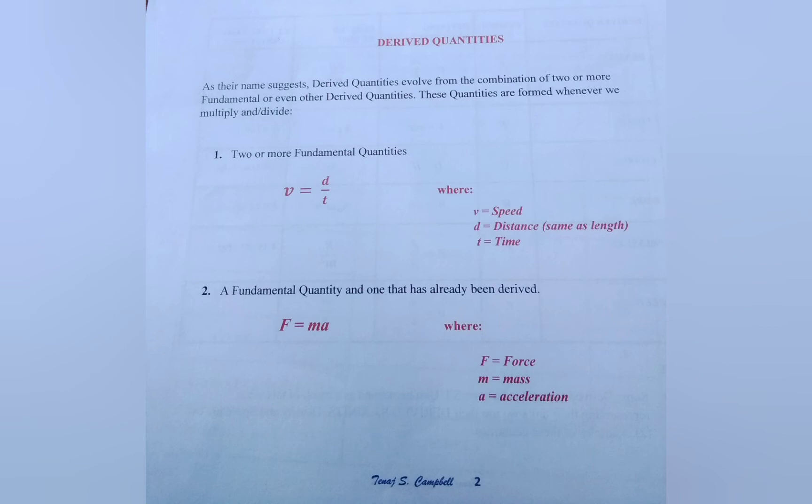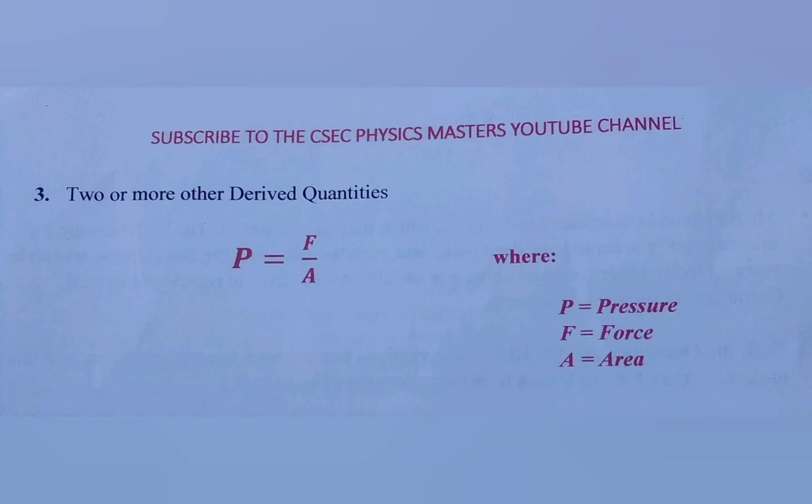Example two highlights a derived quantity that is produced from one fundamental quantity and one that has already been derived. In this case force is equal to mass times acceleration. Force is a derived quantity that is produced by multiplying mass and acceleration. Where mass is the fundamental quantity and acceleration is a quantity that has already been derived.